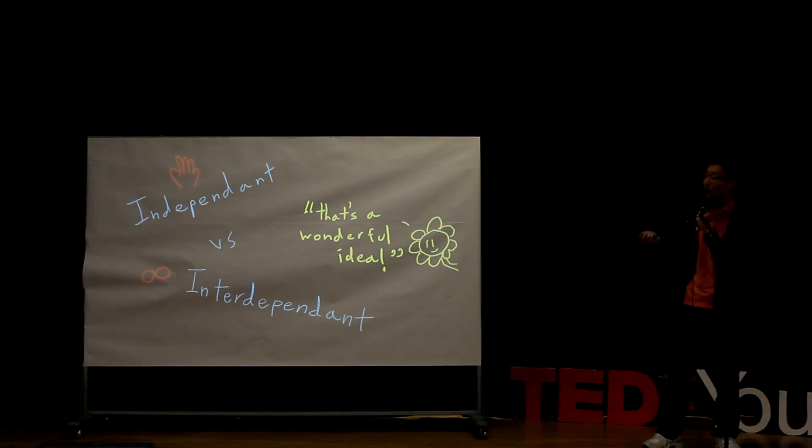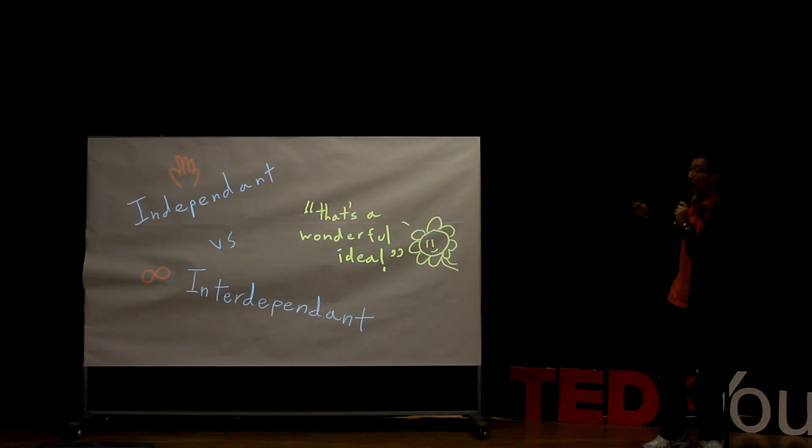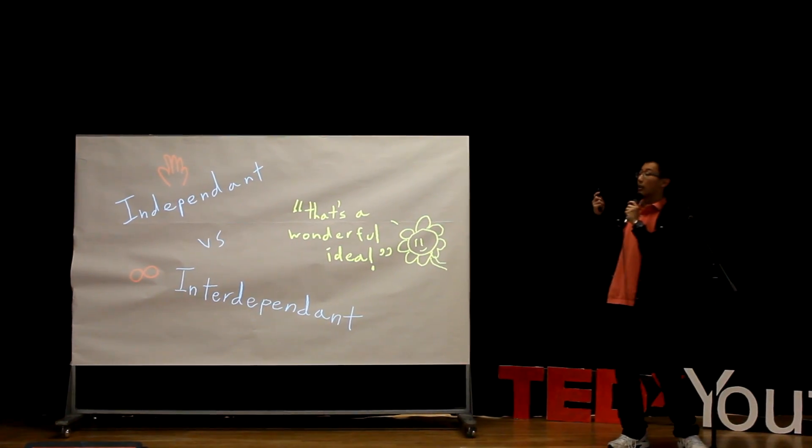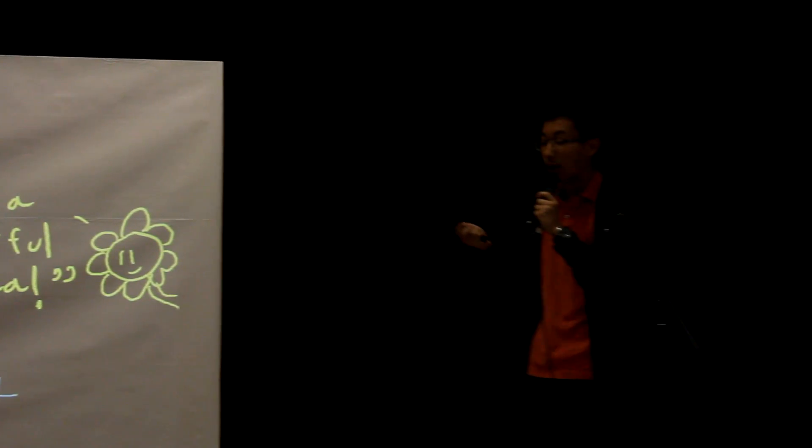So just to review, the trembling hands equilibrium would rely on independent choice and the belief that you are playing it safe. The Nash equilibrium would result from interdependent choice and the belief that you should play as a team with your partner.